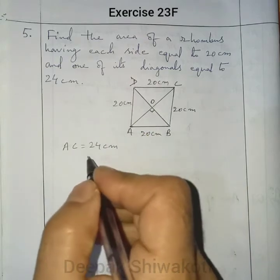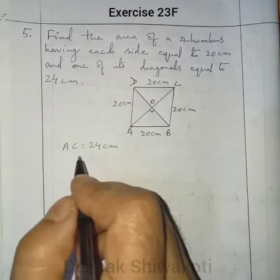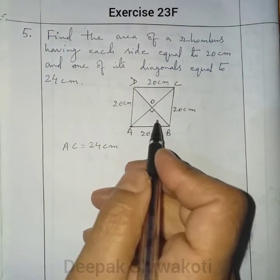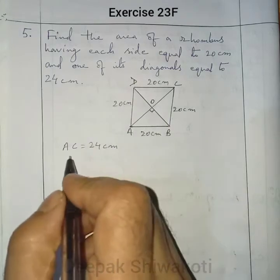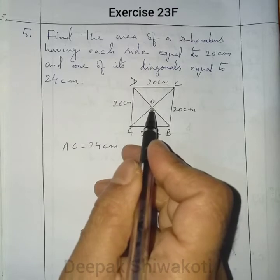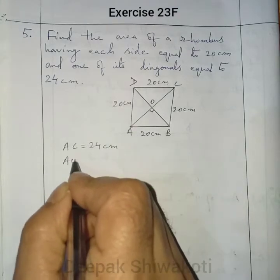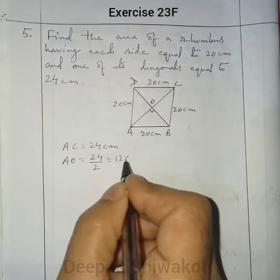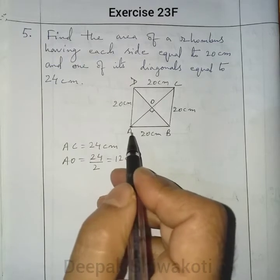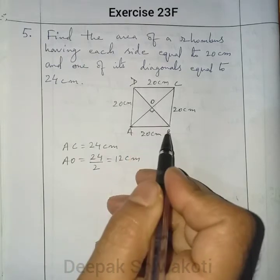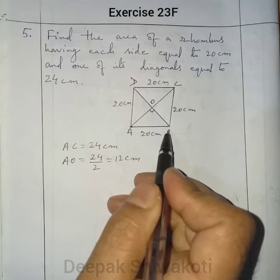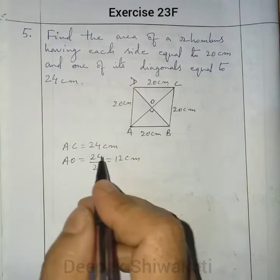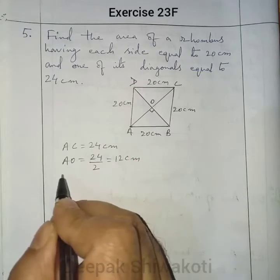We know the intersection will divide the diagonal into two equal halves. That is, AC will be divided into two equal halves. So AO equals 24 by 2, which is 12 centimeter. AO equals 12 centimeter, and AB equals 20 centimeter. OB we don't know — we have to find it. Taking the help of the Pythagoras theorem, by Pythagoras theorem, AB is the hypotenuse opposite the right angle.